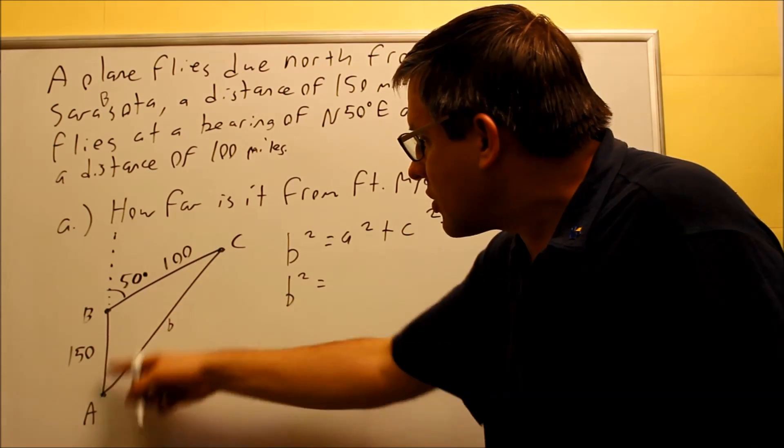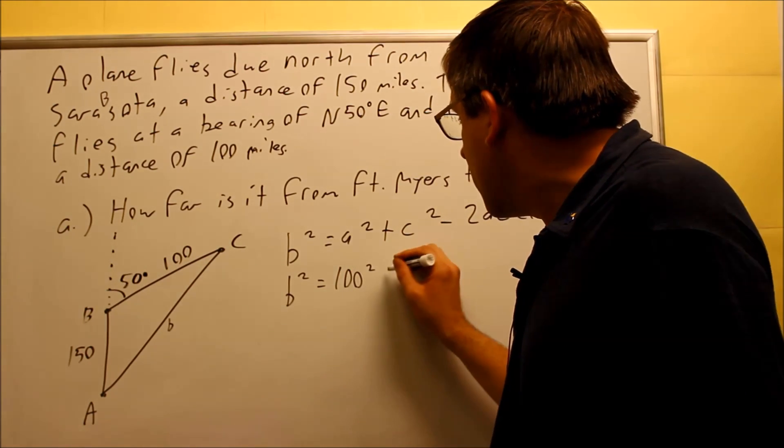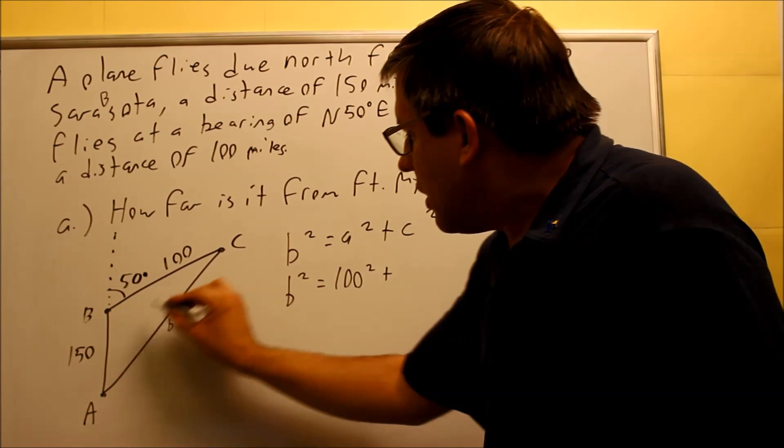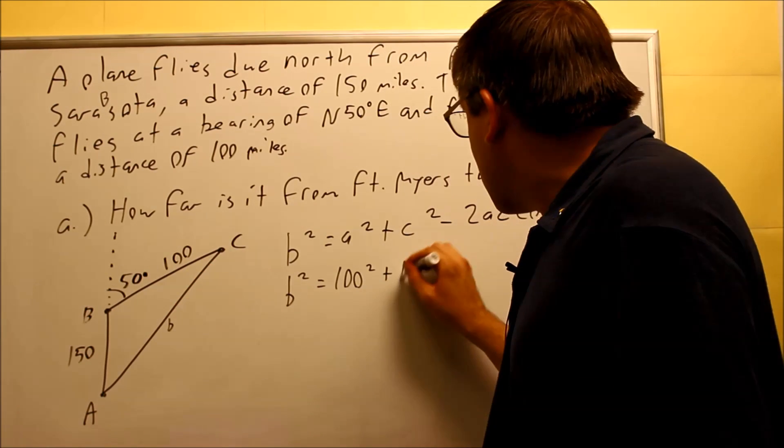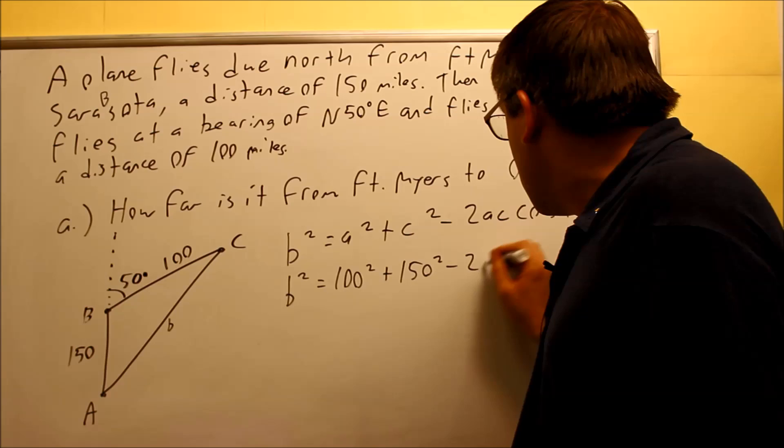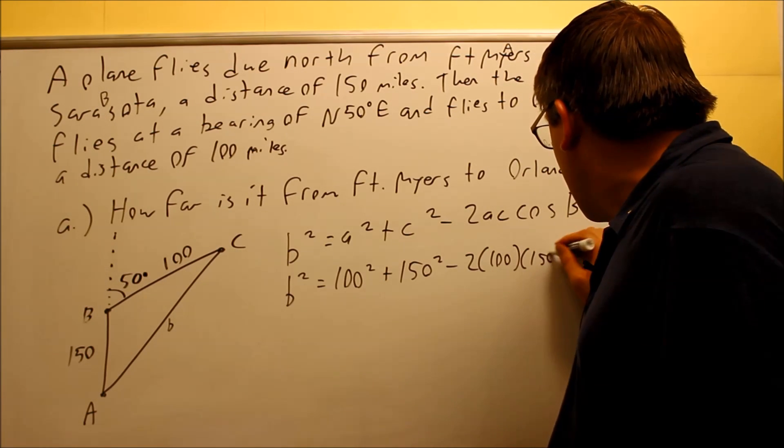So I need to use the law of cosines formula that allows me to solve for B. So I have B squared equals A squared plus C squared minus 2AC cosine B. So let's start putting in my given information. My A is across there, that's going to be 100, 100 squared. C is the side opposite angle C, that's 150, 150 squared. And I have 100 and 150 here.